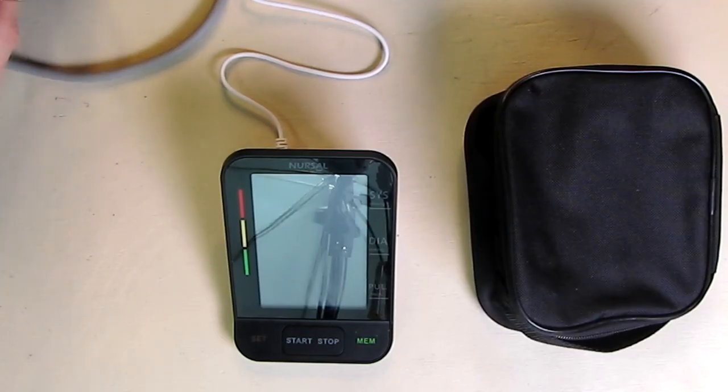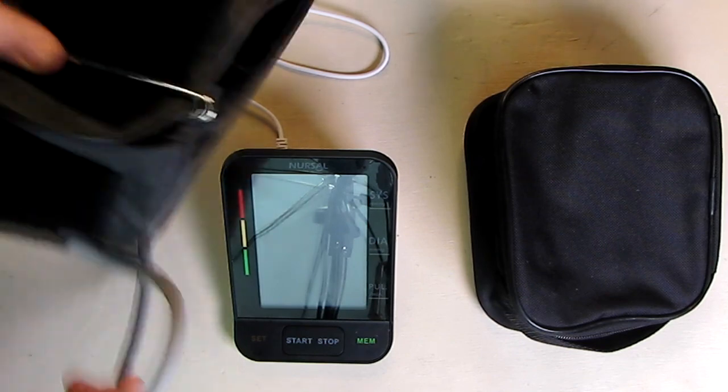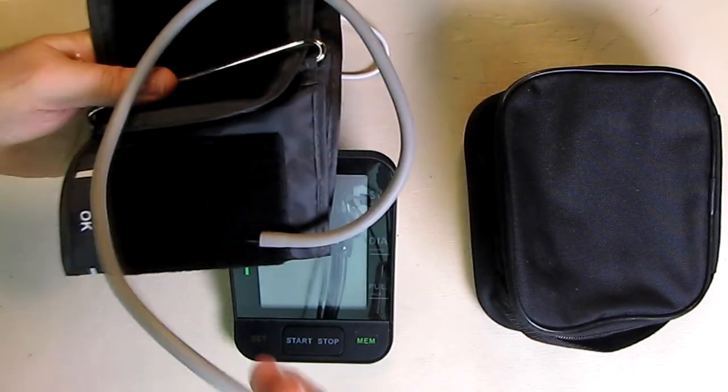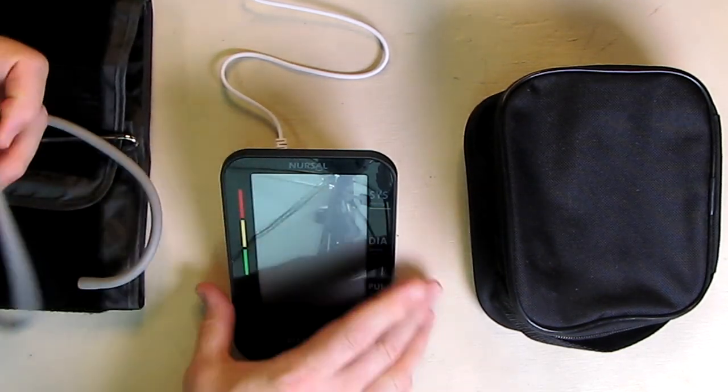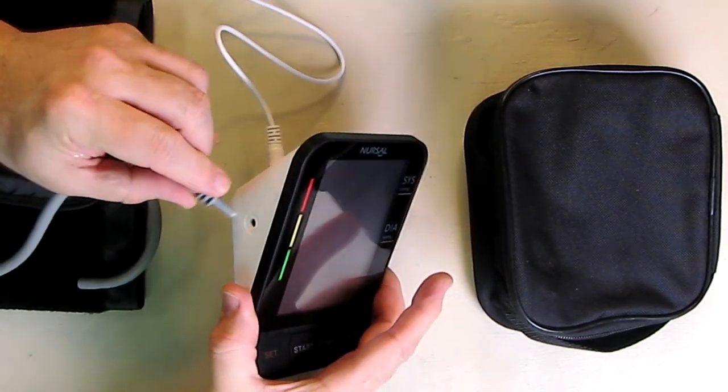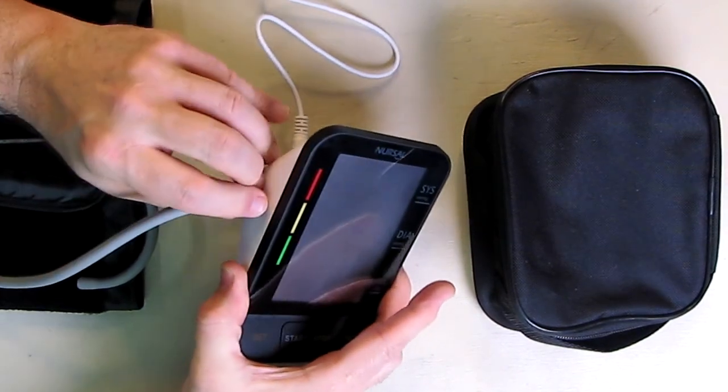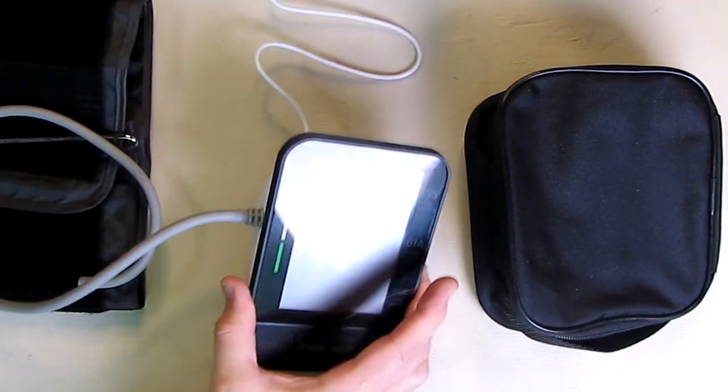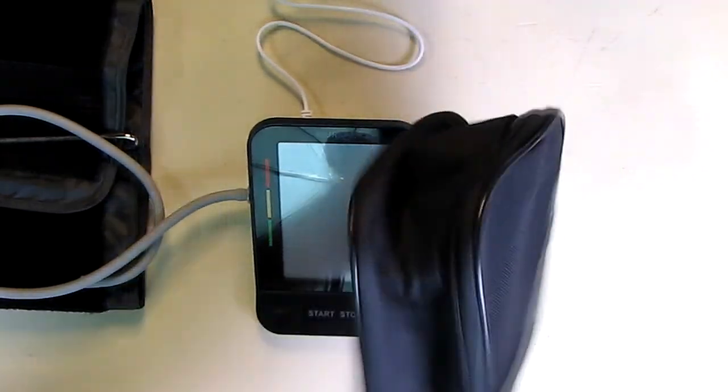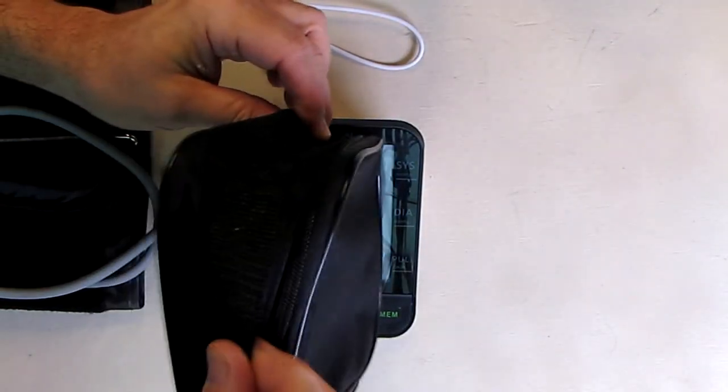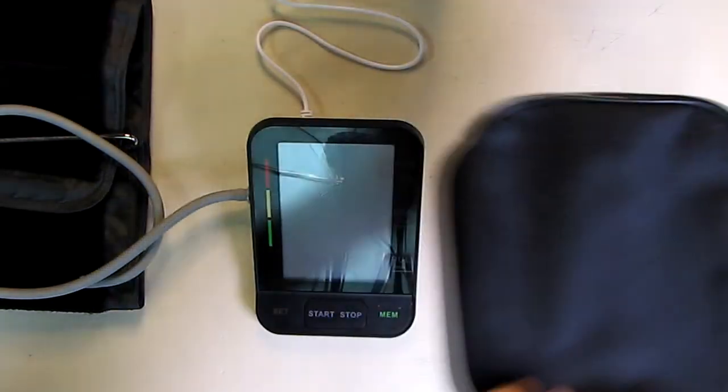The cuff itself has its vacuum attachment right there on the back, and that goes simply right on the side right here. It's a pressure fit, and it just goes right in. Simple as that. The carrying case is nice quality with a zipper and a nice little handle.